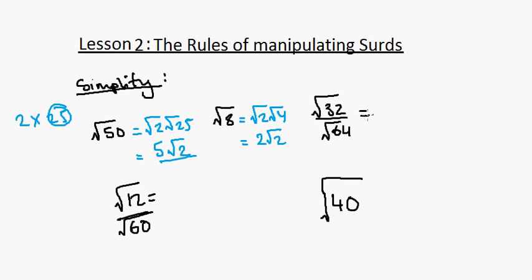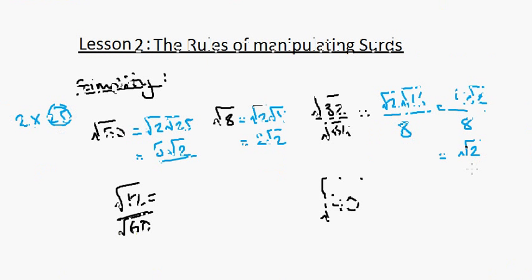The square root of 32 over the square root of 64. Root 64 is 8. The factors of 32 are 2 times 16. 16 is a square number, so we have root 2 times root 16. Root 16 is 4, so we have 4 root 2 over 8. We can divide this by 4, so we get root 2 over 2, which is the simplest form.